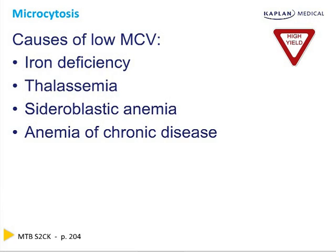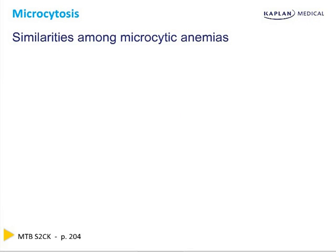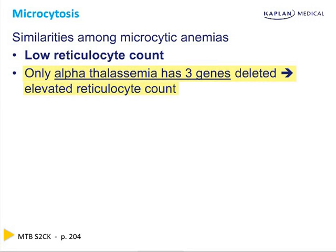Don't walk onto your test without knowing what causes microcytosis. There is a lot of similarity amongst the microcytic anemias — all of them have a low reticulocyte count. That's why we don't describe the anemias first based on reticulocyte count, because you can't tell which one you have based on reticulocytes. Most macrocytics also have a low reticulocyte count. B12 and folate deficiency have a low reticulocyte count because the cells are just not made correctly. Only alpha thalassemia with three genes deleted elevates the reticulocyte count, because those cells are made but are very defective.